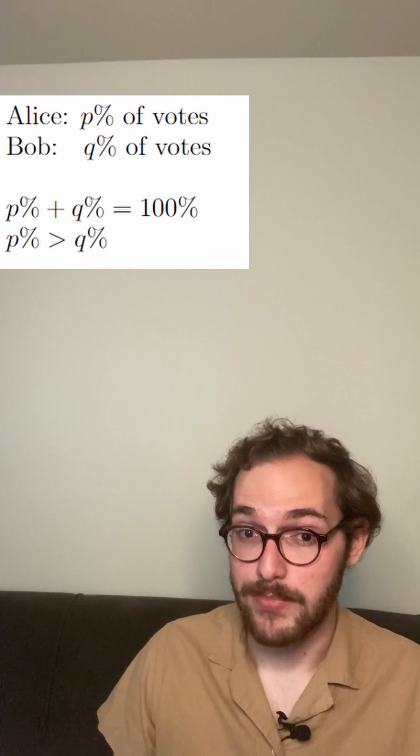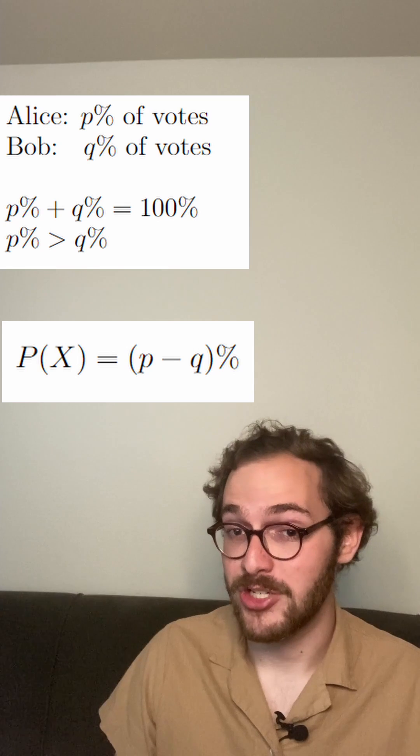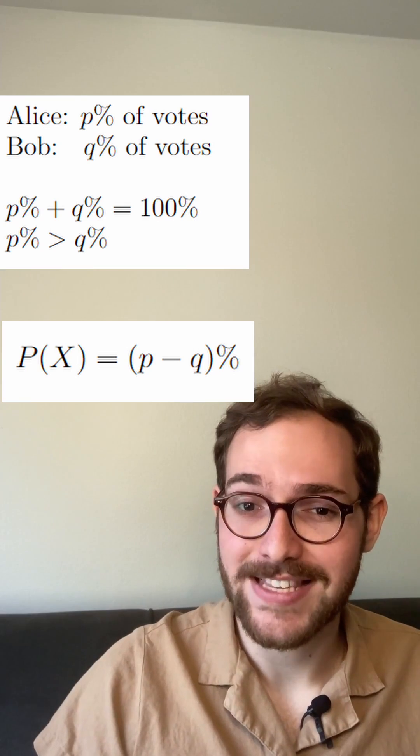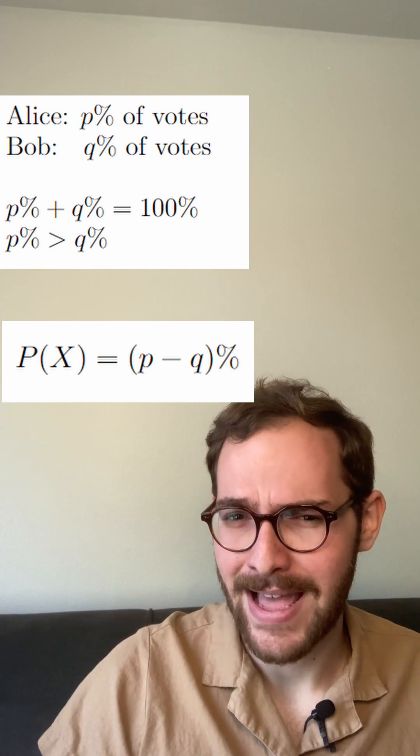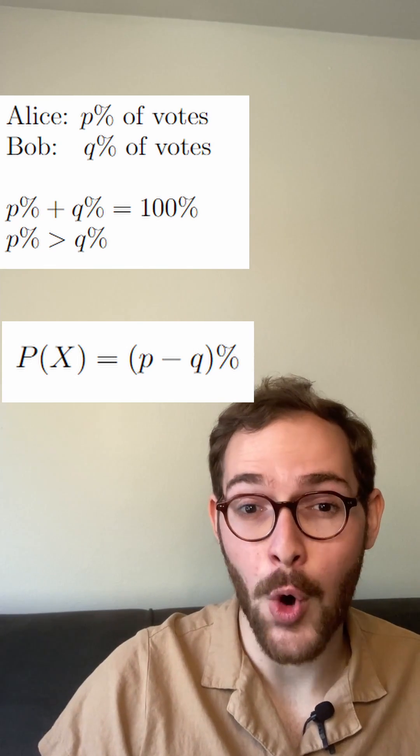Remarkably, the answer is incredibly simple. There's a p-q% chance that Alice will have always been ahead. What surprises me about this fact is that it doesn't depend on how many votes get cast, and only on the percentages.